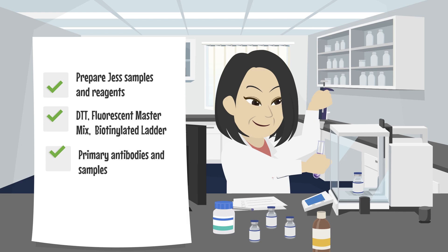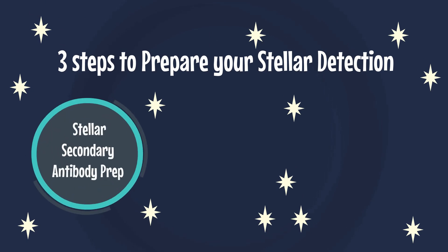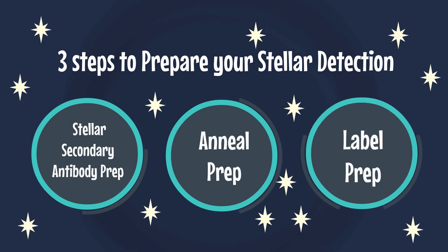Primary Antibodies, and Samples. Three steps to prepare your Stellar Detection: Stellar Secondary Antibody Prep, Anneal Prep, and Label Prep.